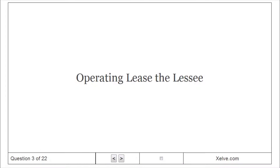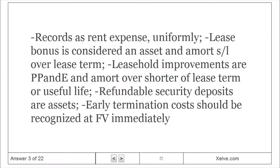Operating lease — the lessee records as rent expense. Lease bonus is considered an asset and amortized straight-line over the lease term. Leasehold improvements are capitalized and amortized over the shorter of the lease term or useful life. Refundable security deposits are assets. Early termination costs should be recognized at fair value.